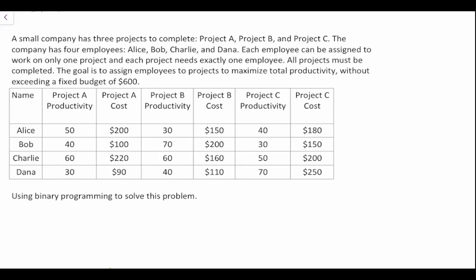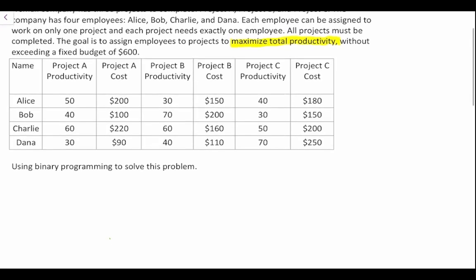The nice part about this question is that they have told us that the goal is to maximize total productivity, so that's a good clue for our objective function. But before we get there, let's go ahead and define our decision variables. We could write out all these decision variables one by one, but that would take quite a long time, so let's use a shortcut.